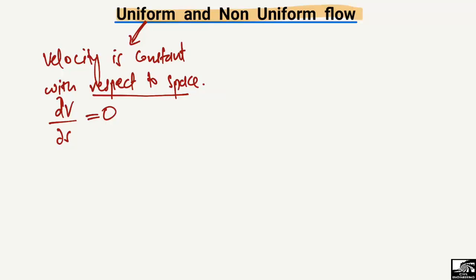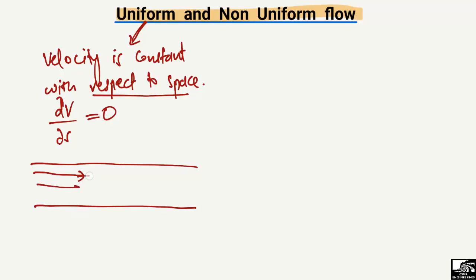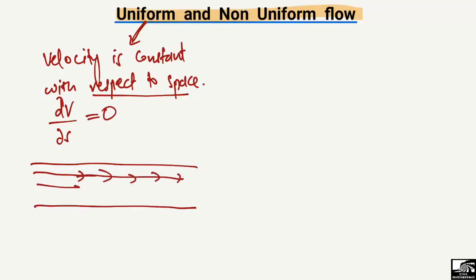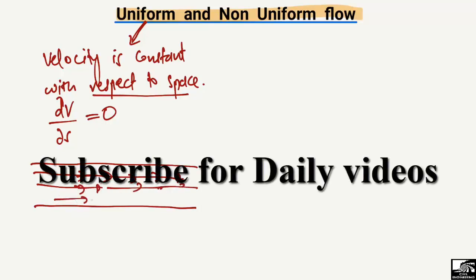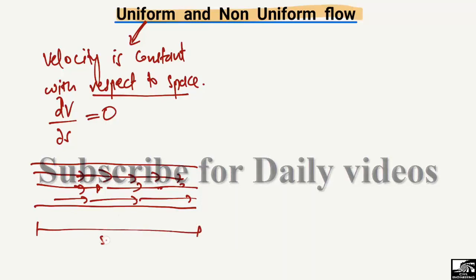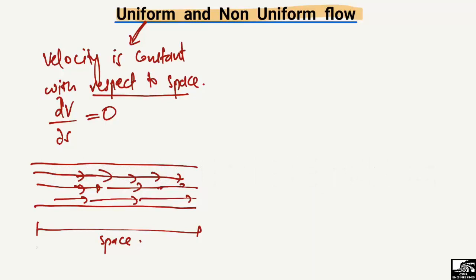For example, consider this picture of a pipe where water is moving. With respect to this space — the length in the direction of flow — from one point to a second point, there is no change in velocity. For example, the velocity here is 2 meters per second, and further along it is also 2 meters per second. So the velocity is constant with respect to space.